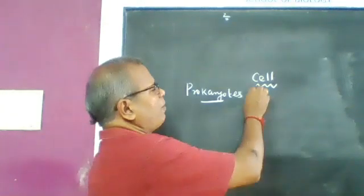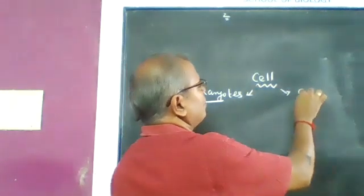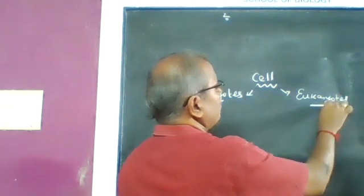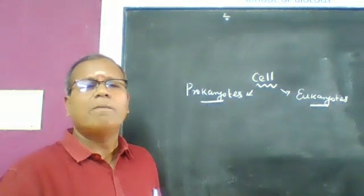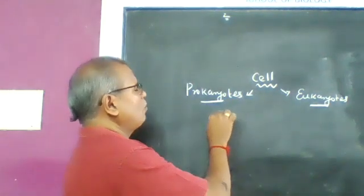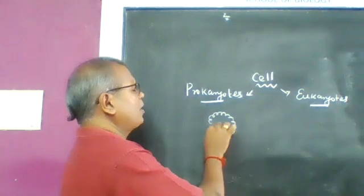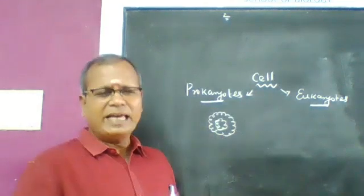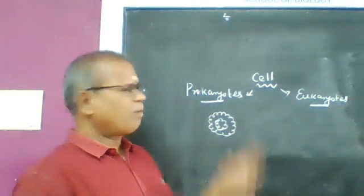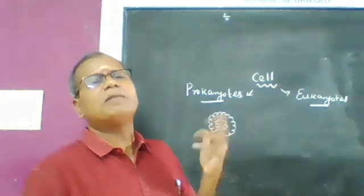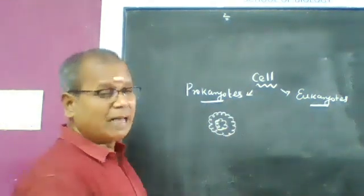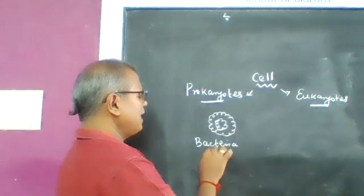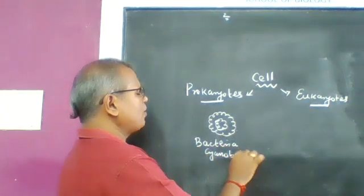'Pro' means primitive and 'karyon' means nucleus, giving us 'primitive nucleus.' An organism with a primitive or incipient nucleus is said to be a prokaryote. Examples of prokaryotic organisms are bacteria and cyanobacteria.